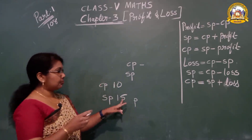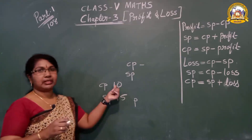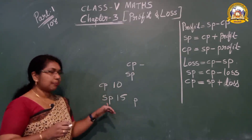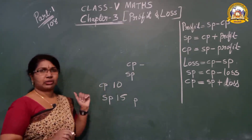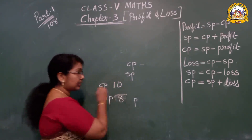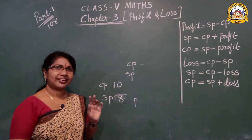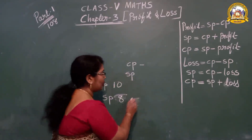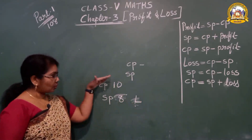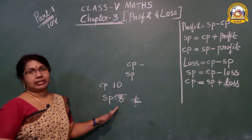So 5 rupees is the profit. The profit formula is: SP minus CP — Selling Price minus Cost Price. If you give the pen to your friend for 8 rupees, you lost 2 rupees — that is called loss. How to find out loss: Cost Price minus Selling Price.